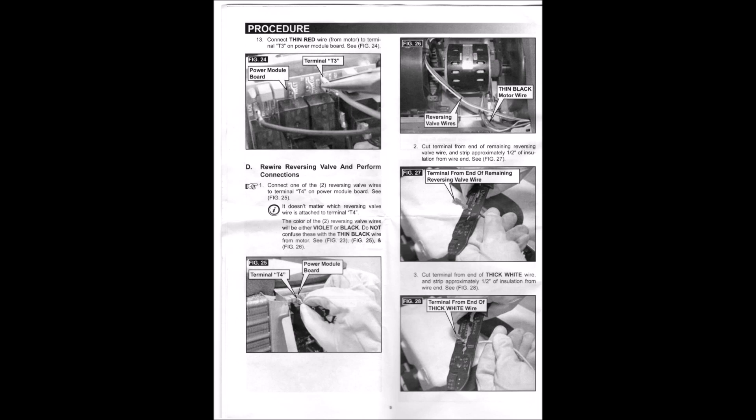And they make a big deal out of this, rewire reversing valve. On the other wire left over you're going to cut the terminal off. Strip about half inch of that. And then cut the end of the thick white wire. Strip a half end of that. And on the next page you'll see that you're just going to splice those together.